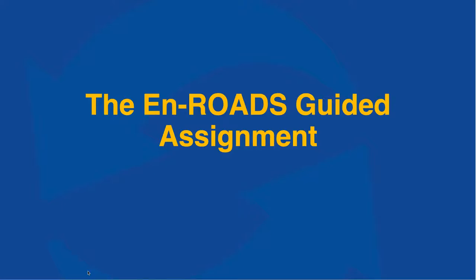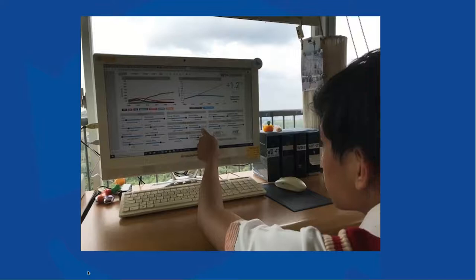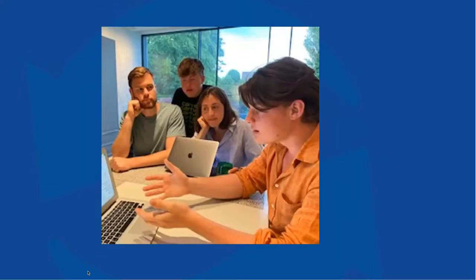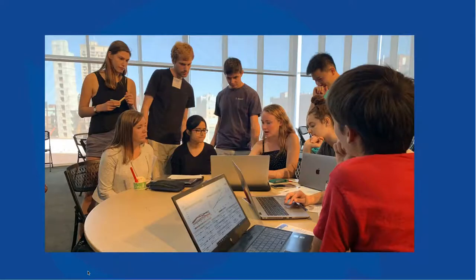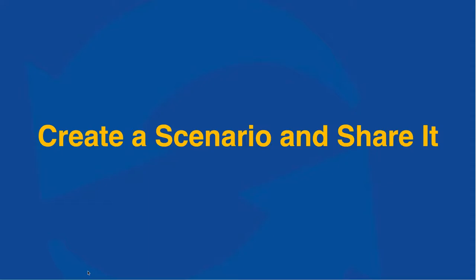The En-ROADS climate guided assignment or student assignment is a way for people to think through all the questions that might come up as they make their own scenario. Several PDFs or Word documents are shared — a student can work alone, in a small group, or a larger group to make a scenario and reflect on all of the implications for the world and their experience. There's also a template for creating a PowerPoint slide to summarize results and share with others, useful for design competitions or presentations.